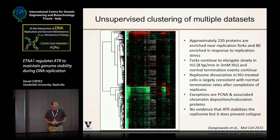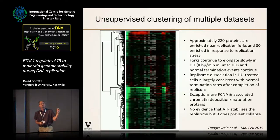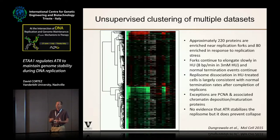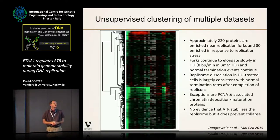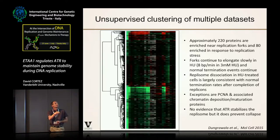Huzaifa published a paper last year, and I'm going to summarize a few conclusions and then move on to unpublished data. We typically observe and quantitate about 220 proteins enriched near replication forks. That includes all the replisome proteins we know of, as well as many proteins involved in chromatin replication and chromatin maturation. Approximately 80 additional proteins become enriched at the replication fork in response to agents like hydroxyurea.